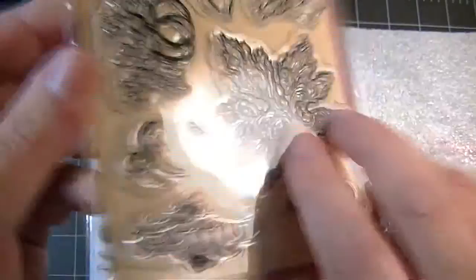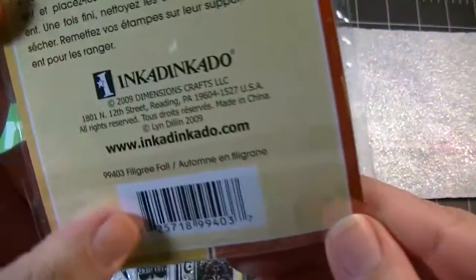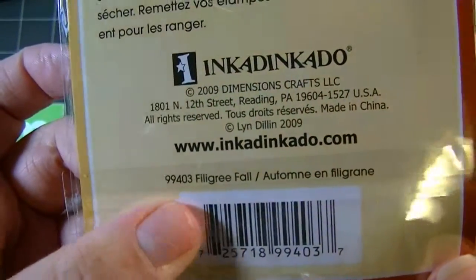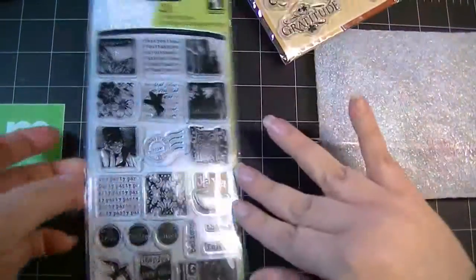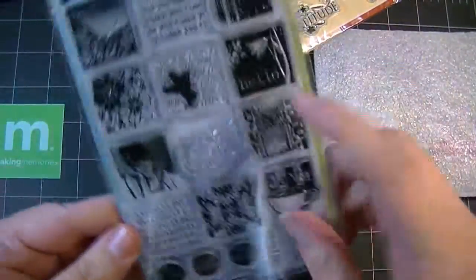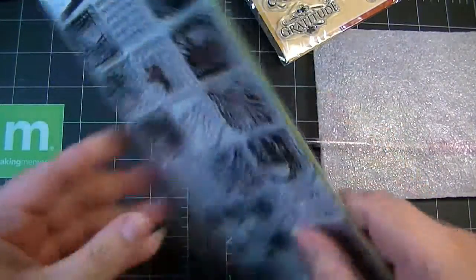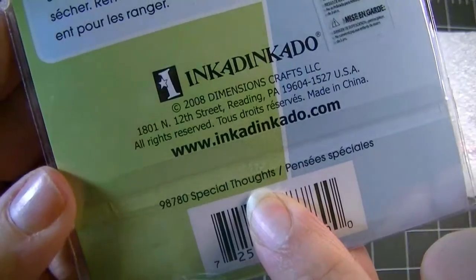This one is Filigree Fall. There's the code number if you want to look that up. And then this one looks like Inchies. It just says clear stamp. The name of the set is Special Thoughts.